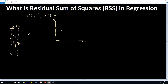What regression is going to do is find a function that relates x and y. That function in linear regression is of the form: y equals f(x), which equals beta zero plus beta one times x. Linear regression will calculate these coefficients beta zero and beta one, and then use them to calculate the value of y.